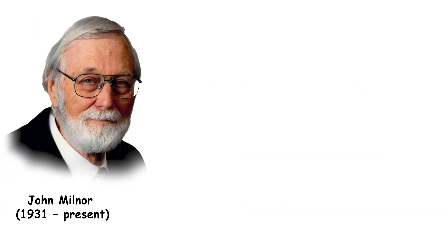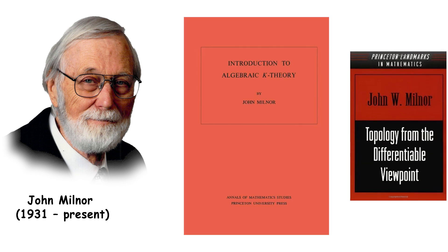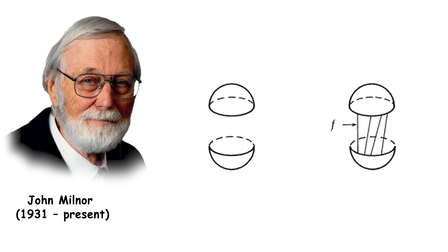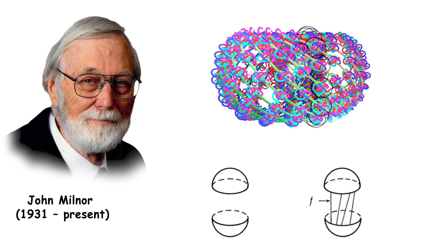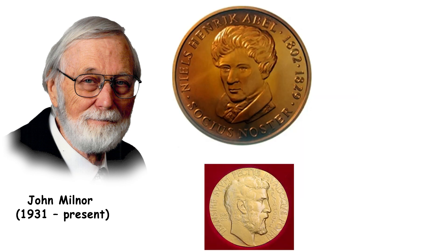John Milnor is an American mathematician known for his work in differential topology, K-theory, and dynamical systems. Milnor's discovery of exotic spheres showed that there are differentiable structures on the seven-sphere that are not equivalent to the standard one. He received the Fields Medal in 1962 and the Abel Prize in 2011 for his groundbreaking contributions.